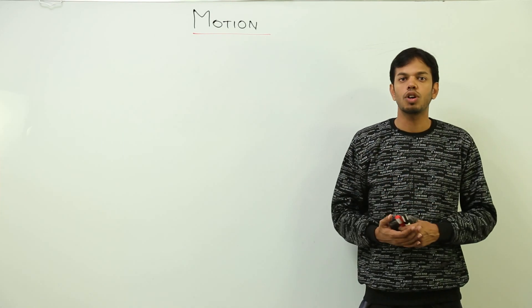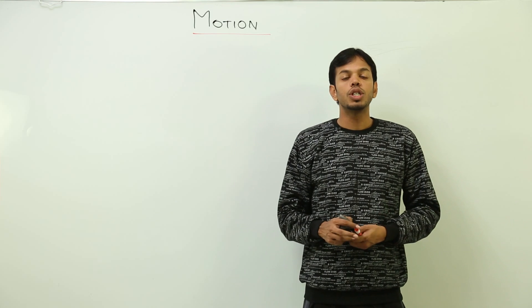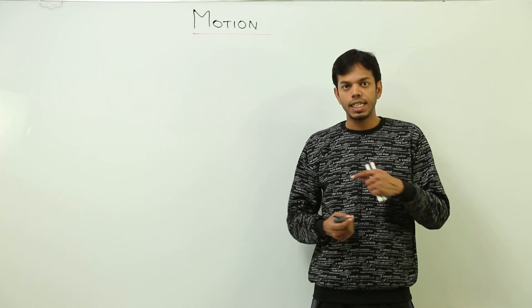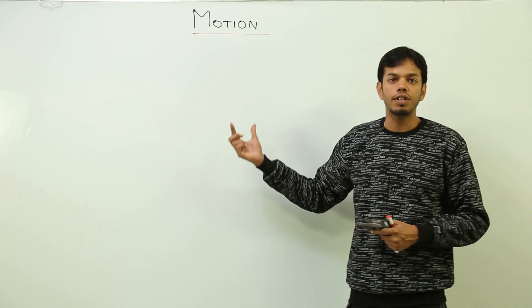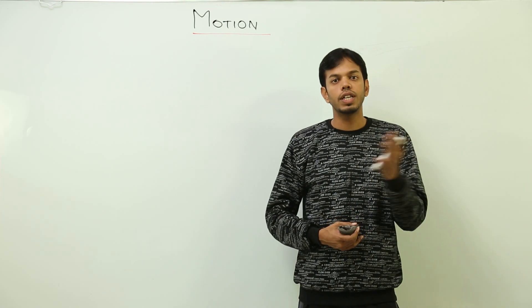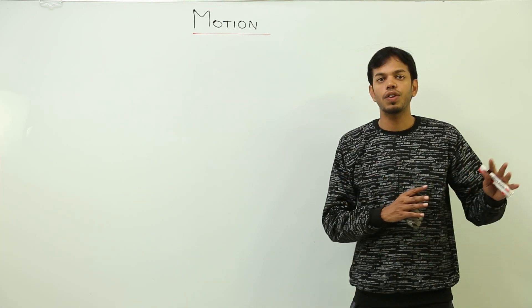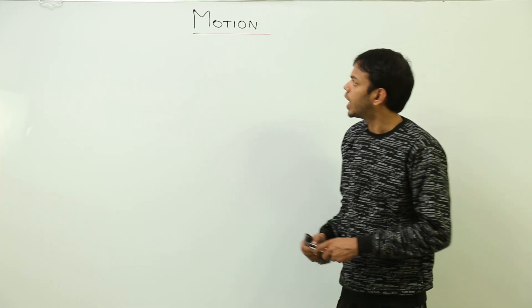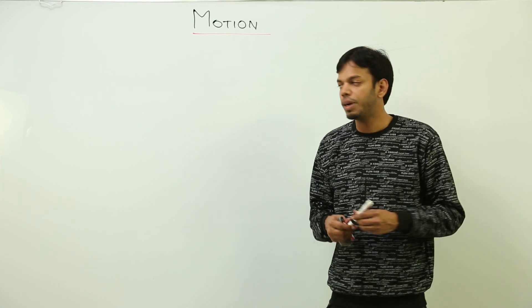So motions could be simple as well as complex. Moreover, motions could be relative as well - as I just gave you an example of two cars driving side by side, the motion of one with respect to another. There are many examples related to motion. So now we'll start studying about motion.